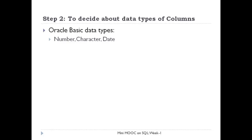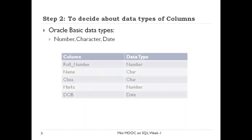The next step will be to decide about the data type of columns. In Oracle, we have number, character and date as basic data types. Thus, role number will be of number data type, name and class will be of character data type, marks will be of number, and date of birth will be of date data type.